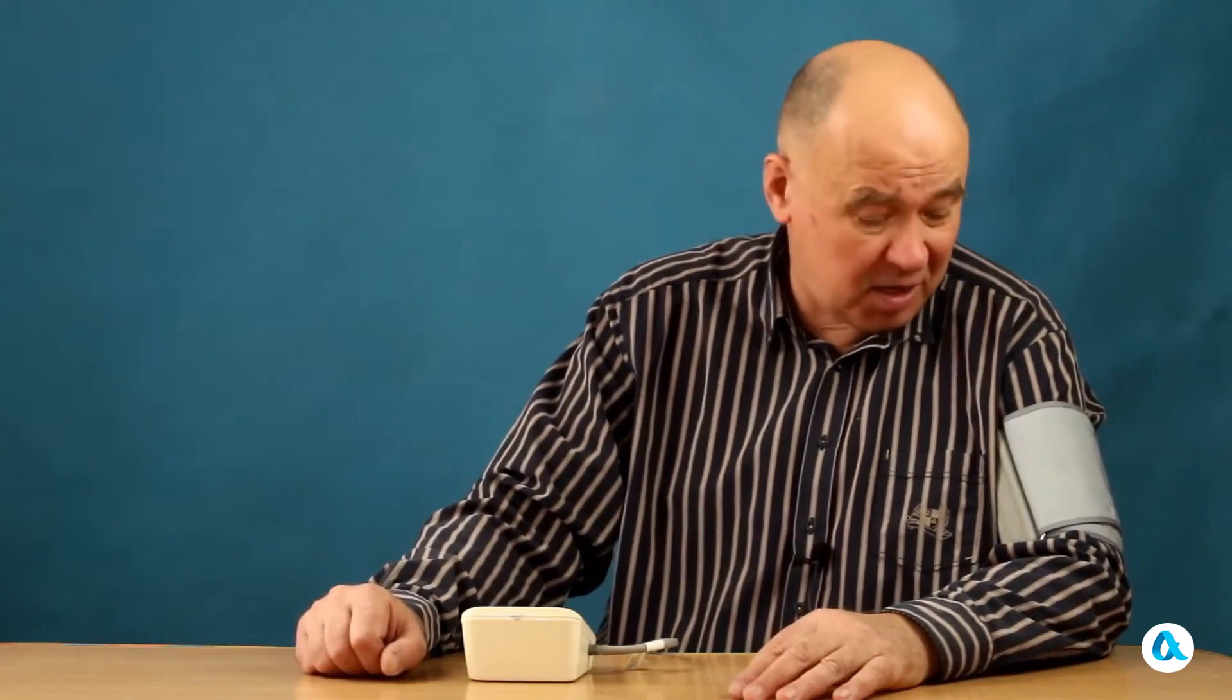About what the upper and lower readings of a blood pressure monitor mean and how we measure blood pressure inside a person by placing a cuff on the outside of the arm.